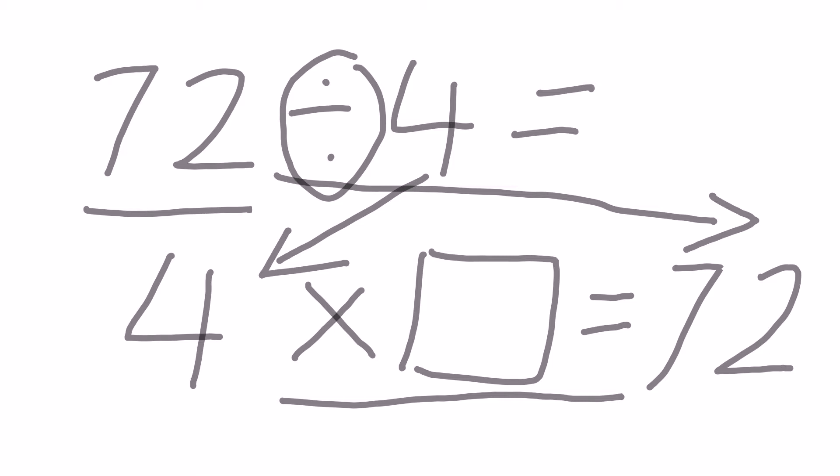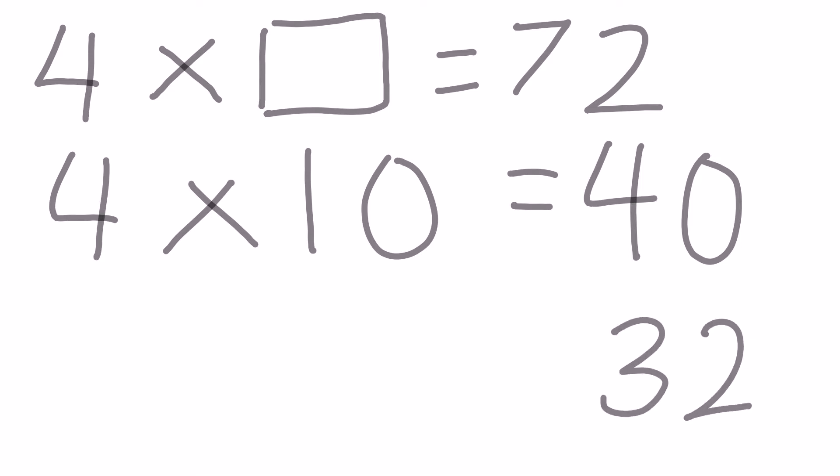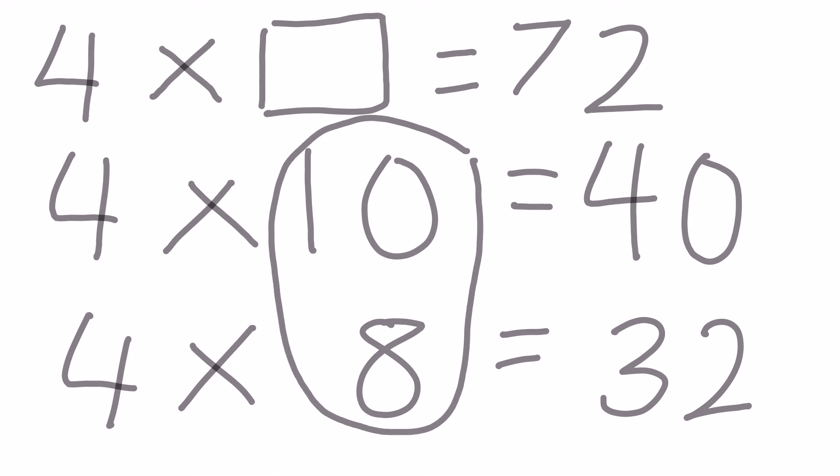So 72 divided by 4 reversed is equal to 4 times something equals 72. Now we can revert back to our Stage 6 strategies to solve these ones. One of our first ones would be place value partitioning. If we take 4 times 10 equals 40, then we know that we need to add 32 more. If we know our times tables, 4 times 8 equals 32. We add the two numbers together: 10 plus 8 equals 18.